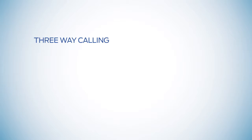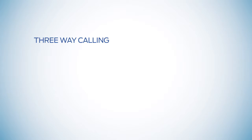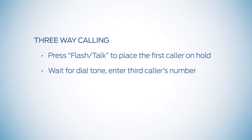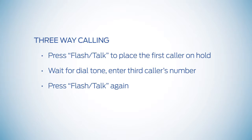You can bring a third caller into an existing call by pressing flash talk, placing the first caller on hold, waiting for a dial tone, and dialing the third caller's number. Then press flash talk again for all parties to join the conversation.